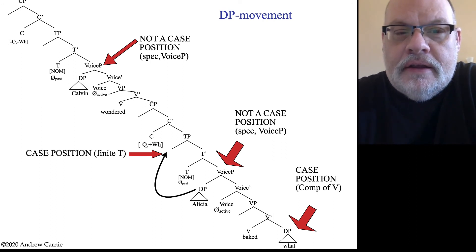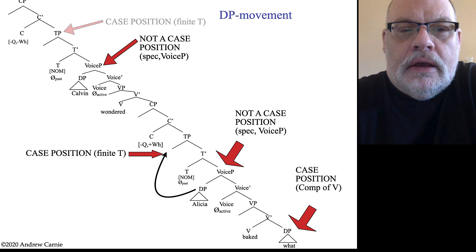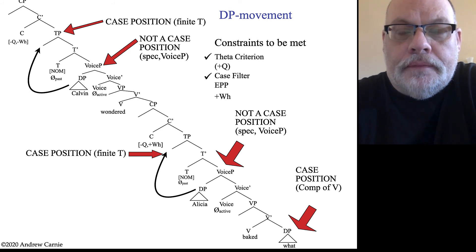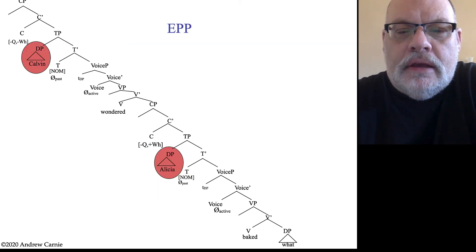We're going to see exactly the same things upstairs. So Calvin is not in a case position. But there is a case position, which is the specifier of the finite matrix or main clause TP. Now, once we do those two little movements, we've met the case filter. These two movements also help us meet the EPP because the DP is in the specifier of the TP, which is required by the extended projection principle. So the EPP is also met.